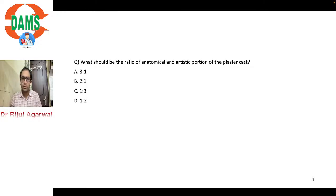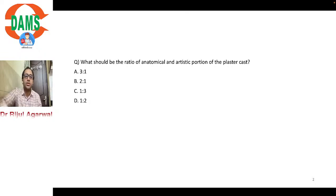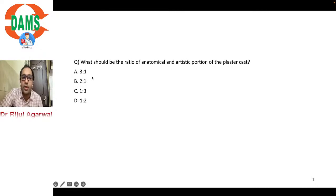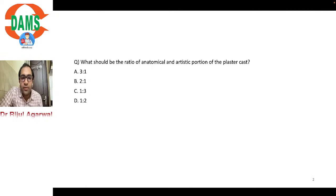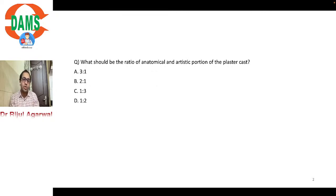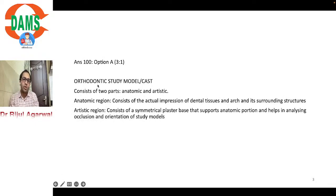Starting with the first question: what should be the ratio of the anatomical and artistic portion of the plaster cast? It's a direct question from the book but the options are a bit confusing. If you remember, the answer is 3 is to 1. To simplify: the anatomical portion is always greater than the artistic portion. The anatomical portion refers to the dental tissue and the artistic portion is the surrounding base. The correct answer is option A, 3:1.